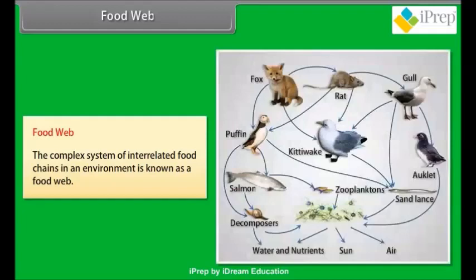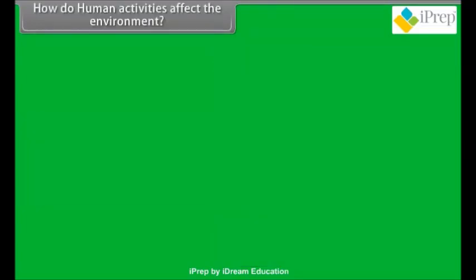The complex system of interrelated food chains in an environment is known as a food web.